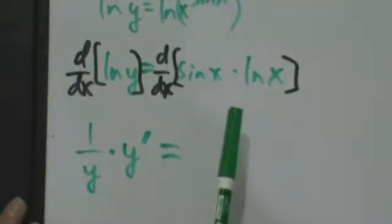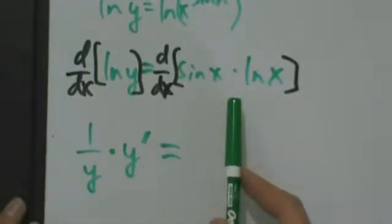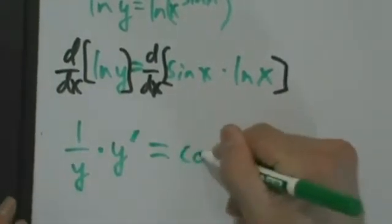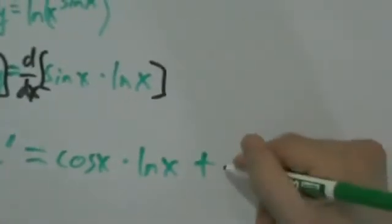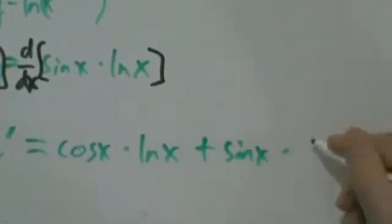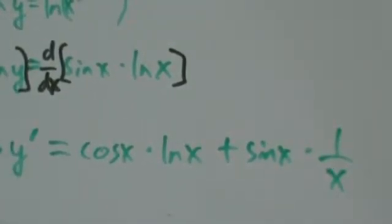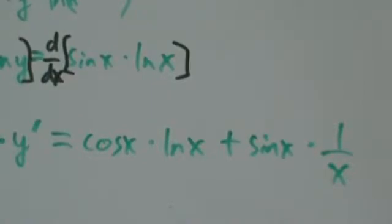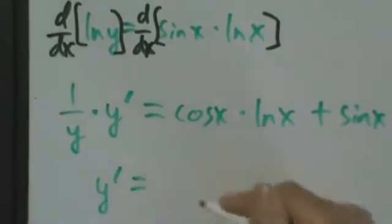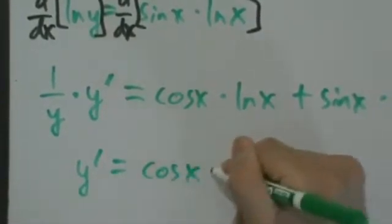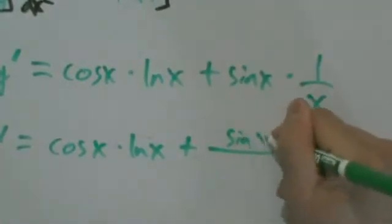On the right side we have a standard product rule: first is sine of x, second is natural log of x. The derivative of that product is derivative of the first times the second, plus the first times the derivative of the second. There's really not a whole lot we can do to simplify that, so now we just multiply both sides by y.